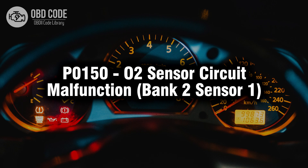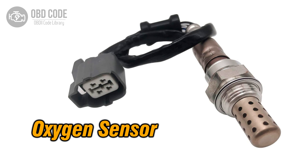Welcome. In this video we will talk about code P0150, its symptoms, causes and possible solutions. The P0150 trouble code indicates a malfunction within the oxygen (O2) sensor circuit of bank 2 sensor 1. This code typically points to issues related to the oxygen sensor positioned in the exhaust pipe before the catalytic converter, monitoring the oxygen content in the exhaust gas, and aiding in emission control.